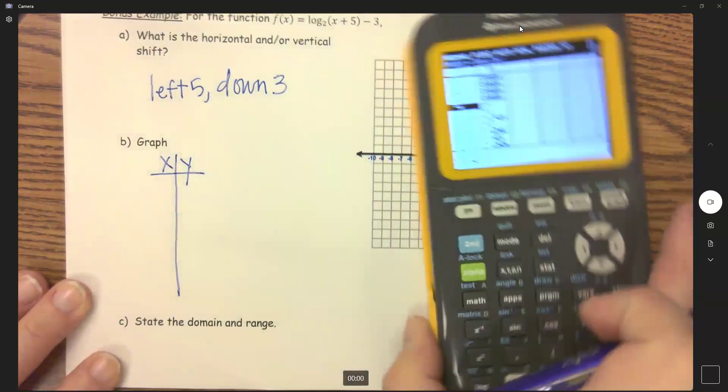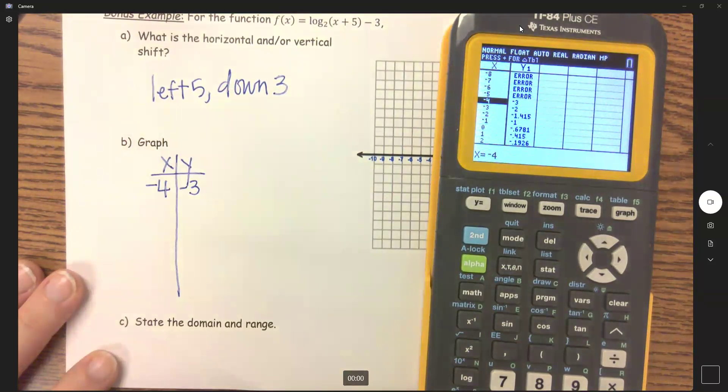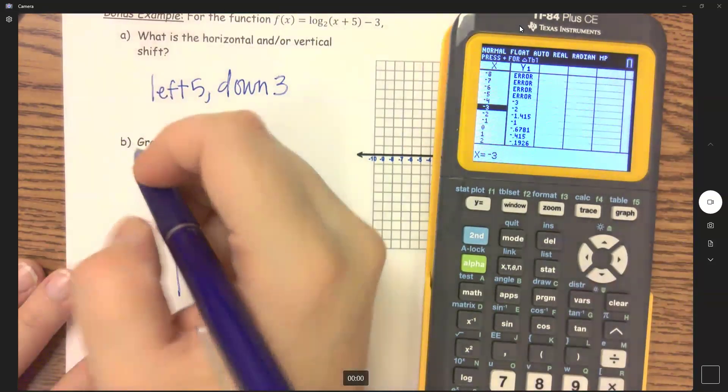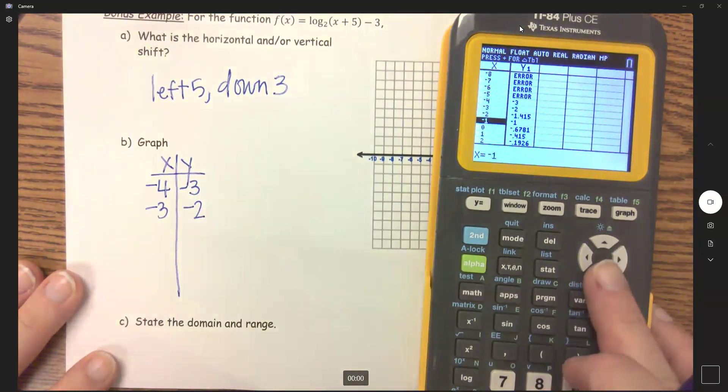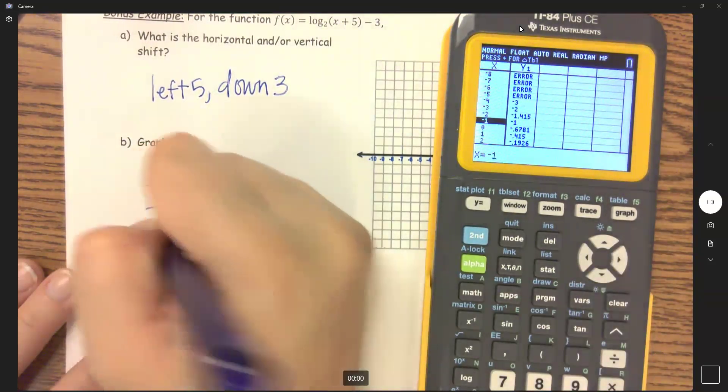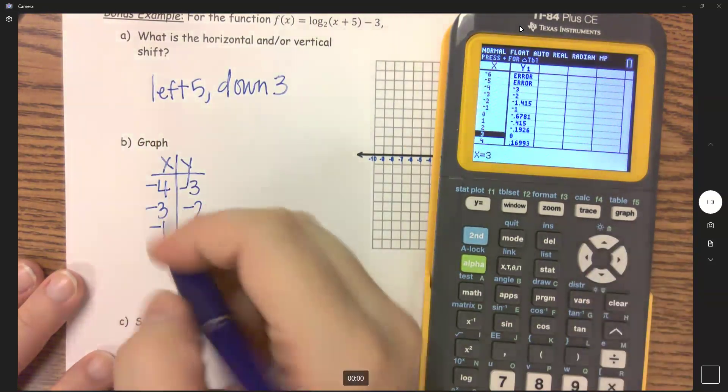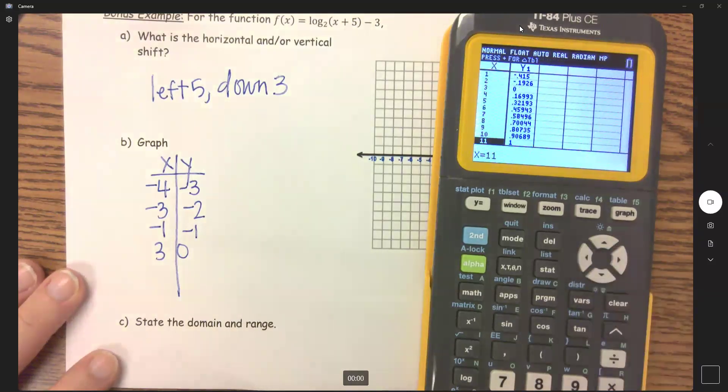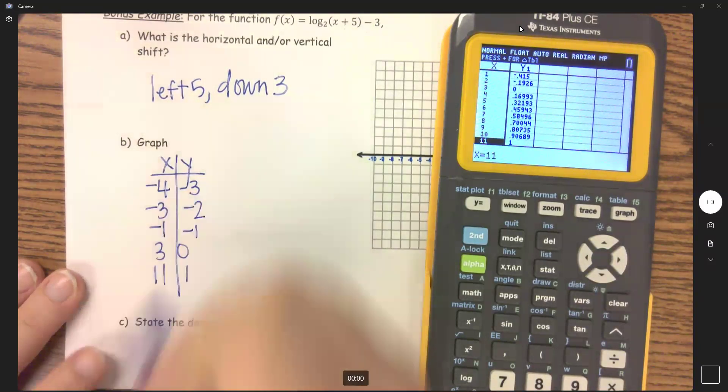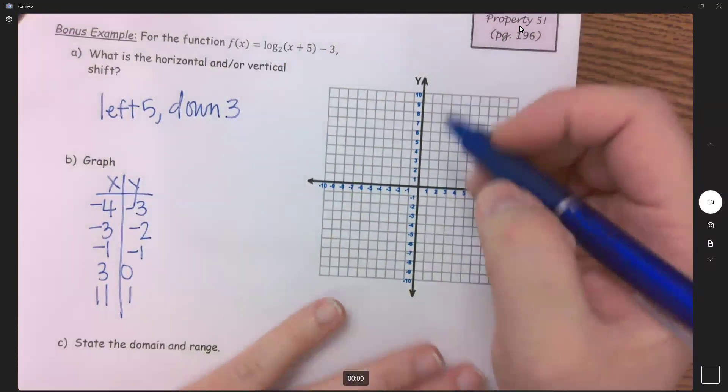I'm going to go negative four, negative three. The next one is negative three, negative two. Here's all whole numbers: negative two, negative one, negative one. We have three zero. See if we can fit one more. That's not really going to fit, but we'll include it: eleven and one. Okay, so I'm going to plot all of these points.